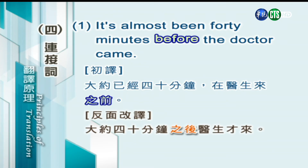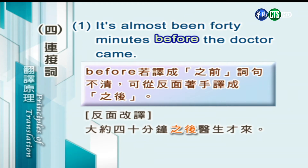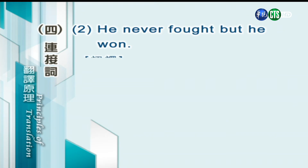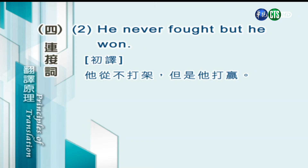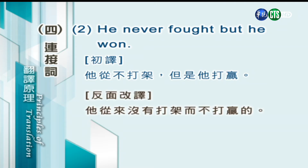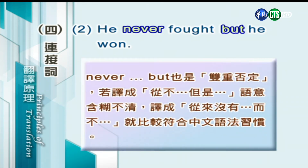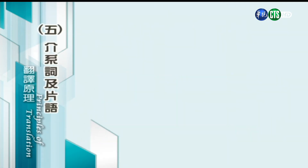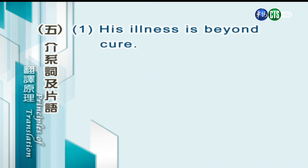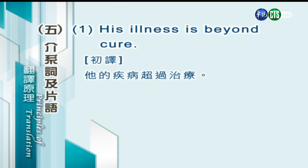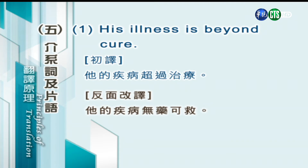第四种：连接词。"It's almost been 40 minutes before the doctor came." 直译：大约已经四十分钟在医生来之前，一看就不是很中文。反面改译：大约四十分钟之后医生才来。before 若译成「之前」，这个词句就不清了，所以我们要从反面着手，把它译成「之后」。"He never fought but he won." 字面翻译：他从不打架但是他打赢，很不中文。反面改译：他从来没有打架而不打赢的。never...but 也是一个双重否定，译成「从不……但是」语义会含糊不清，改译成「从来没有……而不」就比较符合中文的语法习惯。